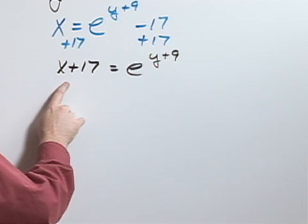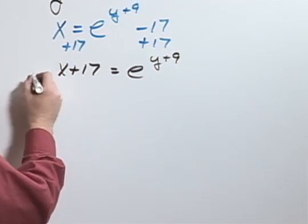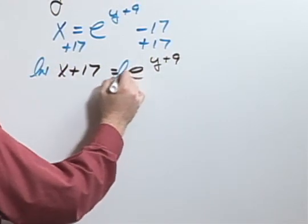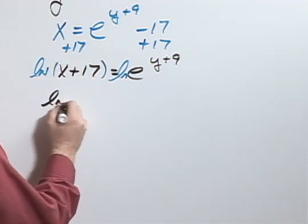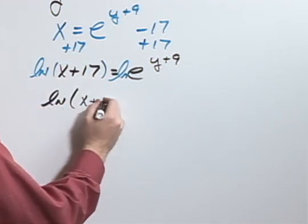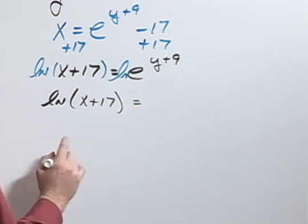Since I have an exponential equation here, I'm going to take the natural log to both sides. So the natural log of x plus 17 will equal...